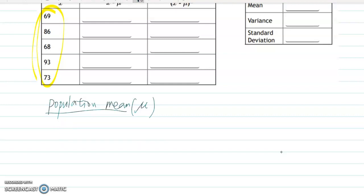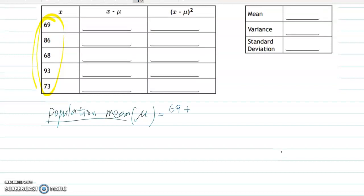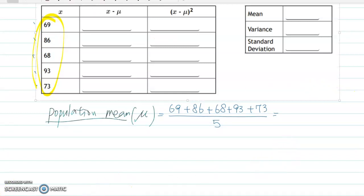But the procedure is exactly the same. You are adding all this data. So 69 plus 86 plus 68 plus 93 plus 73 over 1, 2, 3, 4, 5. So divide by 5. Just calculate. Then you will get 389 divided by 5. So this value becomes 77.8. So the first answer, the mean value becomes 77.8.